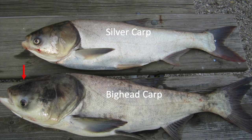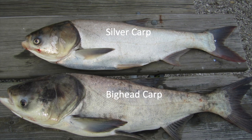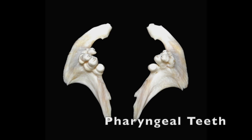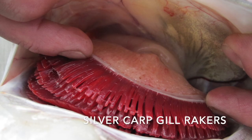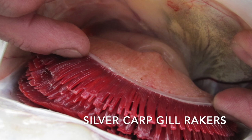Bighead carp are named for their disproportionately large head, downward-facing eyes, and mottled gray-colored scales. The keel, or V-shaped belly, on bigheads does not extend to their throat, only to their midsection, which is a distinguishing factor compared to silver carp. Silver carp have a similar body shape to bigheads, but their scale color is more silvery, their head and mouth is slightly smaller, and their keel extends to their throat — a very distinguishing feature. Bighead and silver carp also have pharyngeal teeth and gill rakers that differ from each other, though these are internal organs not useful to the average person.